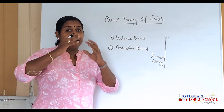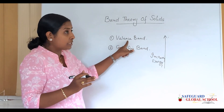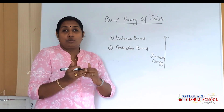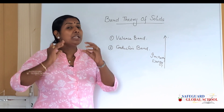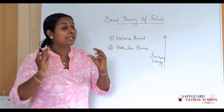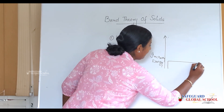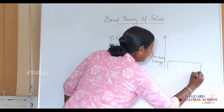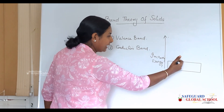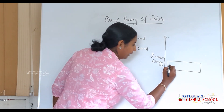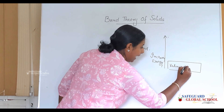When atoms form a solid, they together constitute a valence band. So the valence band is constituted by closely spaced energy levels of valence electrons. In the schematic representation, the valence band is placed lower on the energy axis.